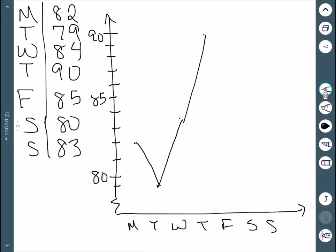Thursday was up to 90. Friday was down to 85. Saturday was at 80. And then Sunday was back up to 83. So this is our time series graph.